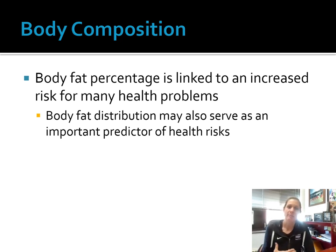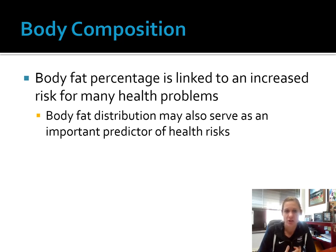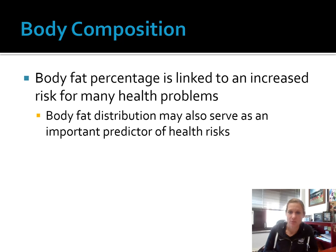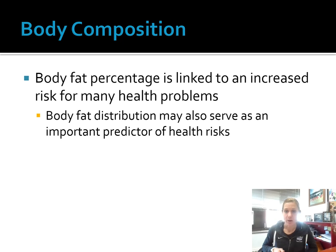Body composition is important when we think about its risk associated with many health issues. High body fat percentage is linked with increased risk for many health problems. Body fat distribution is also an important predictor for health risks — research is showing that abdominal adiposity is more problematic than adiposity stored in other locations.